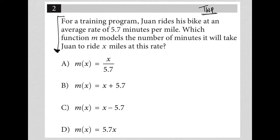So the first sentence here says for a training program, Juan rides his bike at an average rate of 5.7 minutes per mile. So I'm going to write that down: 5.7 minutes per mile.